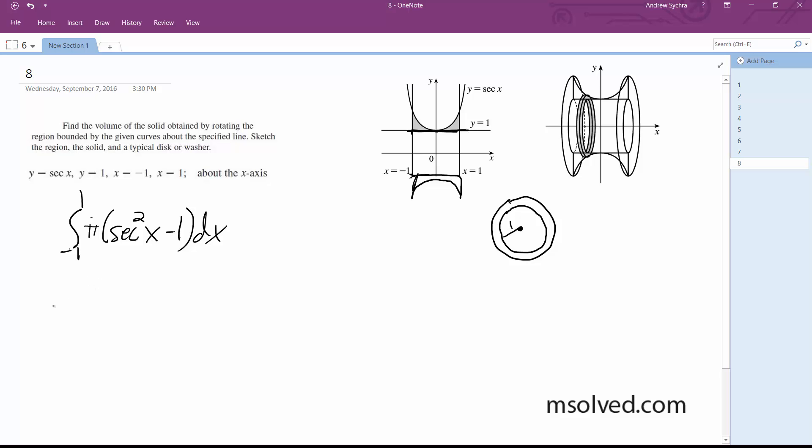Alright, so integrating this, the integral of secant squared is tangent, so we get 2 pi times the tangent x minus x from 0 to 1 is equal to 2 pi times the tangent of 1 minus 1, which is approximately equal to 3.5.